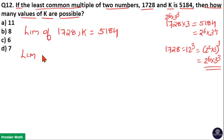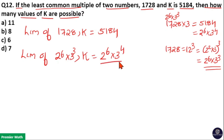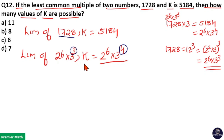Now, LCM of (2 raised to 6 into 3 cubed) and K is equal to 2 raised to 6 into 3 raised to 4. We already know LCM means the product of the highest powers of prime factors. Here in the LCM, the highest power of 3 is 4, but in 1728 the highest power of 3 is 3, which means K must have a factor of 3 raised to 4.